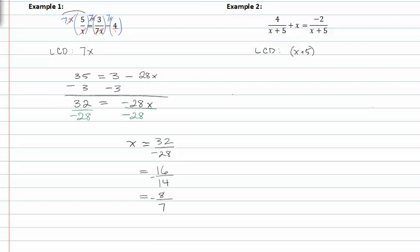We're going to multiply our LCD to each term in the equation with fractions. Once we've distributed that, you'll see before we even distribute that we can divide out common factors. The x plus five in the denominator divides with the x plus five in the numerator. Since there's no denominator in the x term, we're going to have to distribute that.